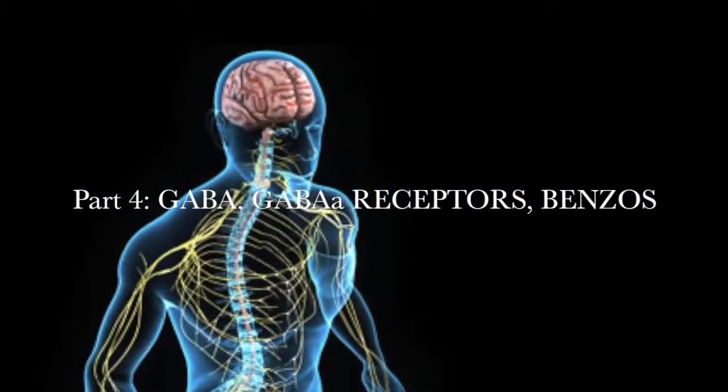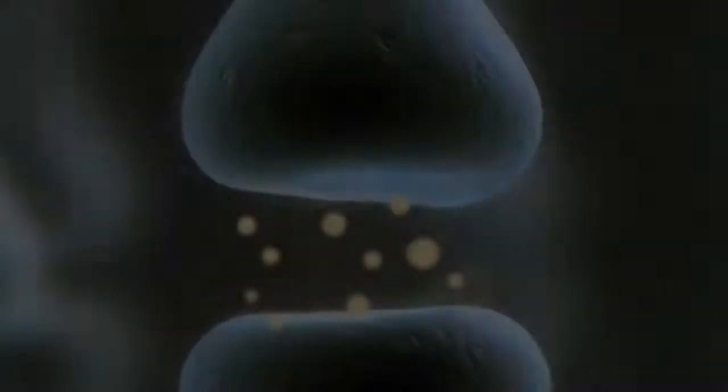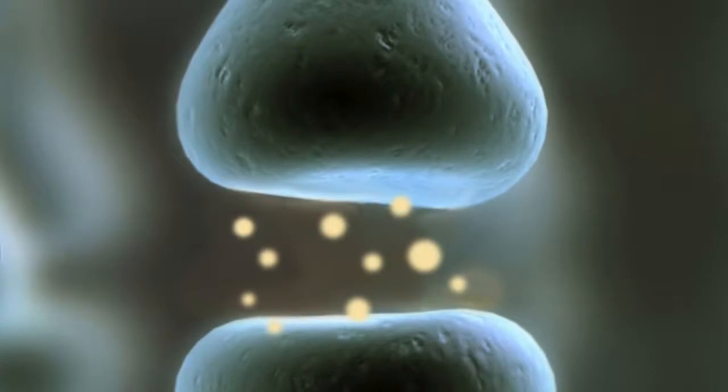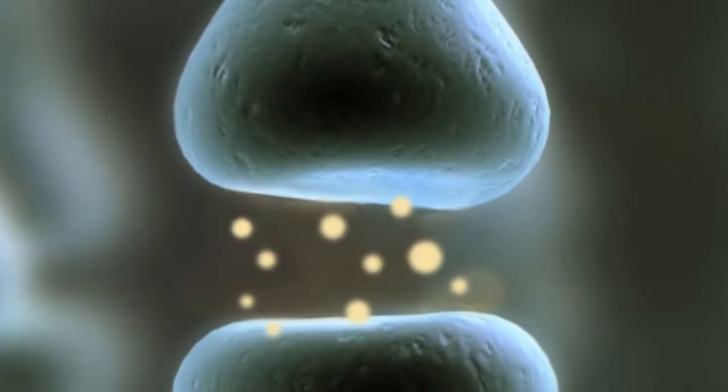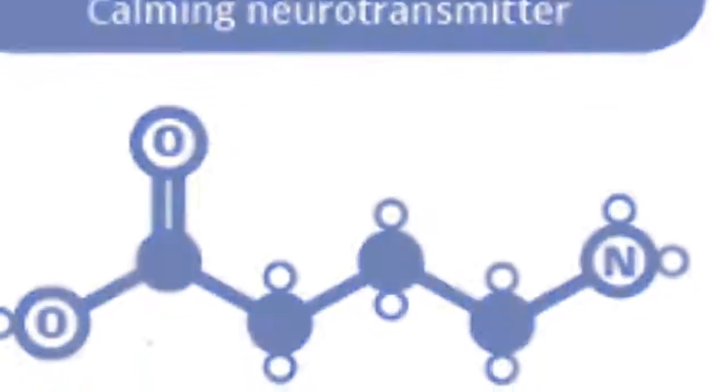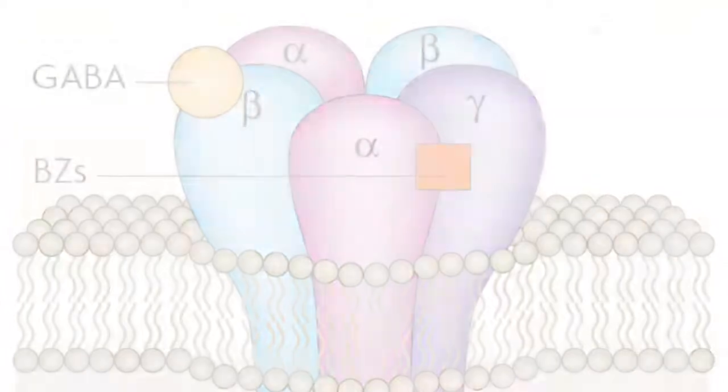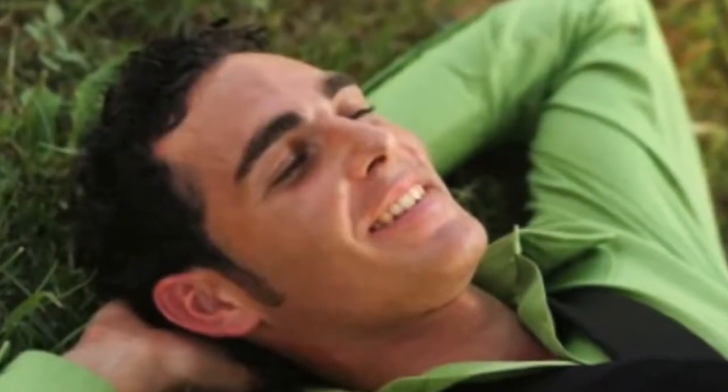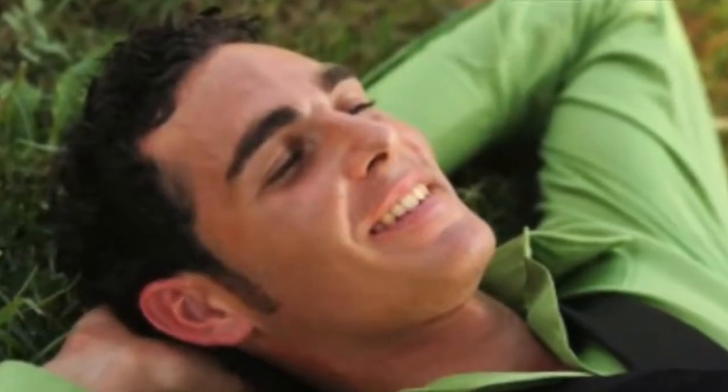GABA is a calming neurotransmitter, or more formally known as an inhibitory neurotransmitter. When GABA is communicated, it relaxes or suppresses the target cell's function.